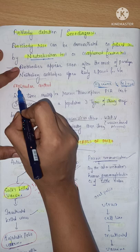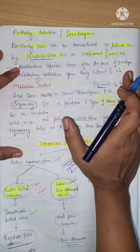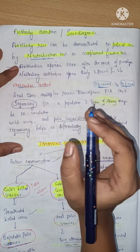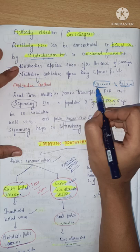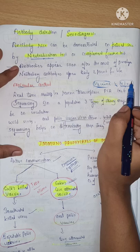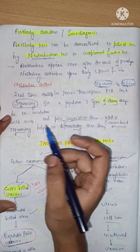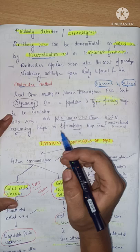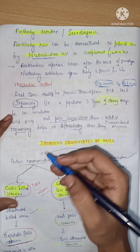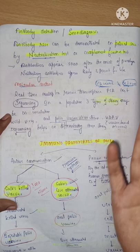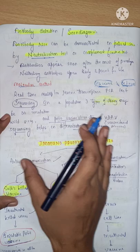The more confirmatory method is molecular diagnosis — real-time multiplex reverse transcriptase PCR. It is used to determine whether it is a vaccine-derived virus or an actual wild strain. It is very helpful in sequencing different strains: wild poliovirus strain 1 (as two strains are already eradicated globally), world poliovirus vaccine strains, and vaccine-derived poliovirus strains can all be detected through PCR.